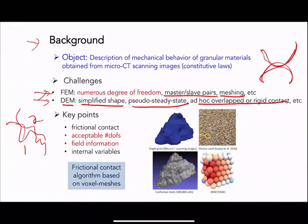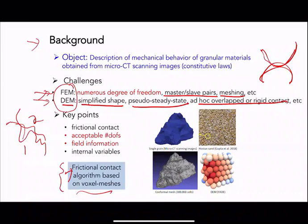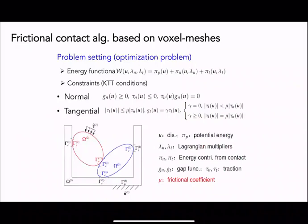The key question is: how do we get the benefits of both approaches and come up with a new numerical method that is easy to use and not prohibitively expensive? What we did is use a voxel mesh, based on previous work, and extend it to a frictional contact algorithm. In this approach, we represent individual particles as a level set with a fixed background mesh.